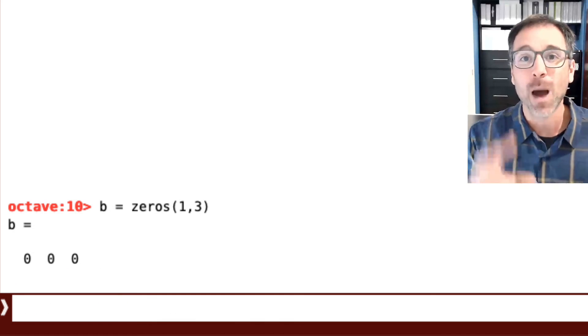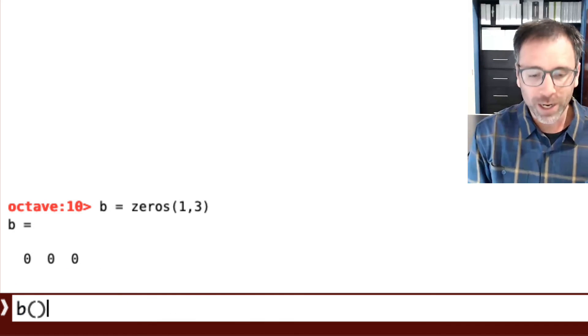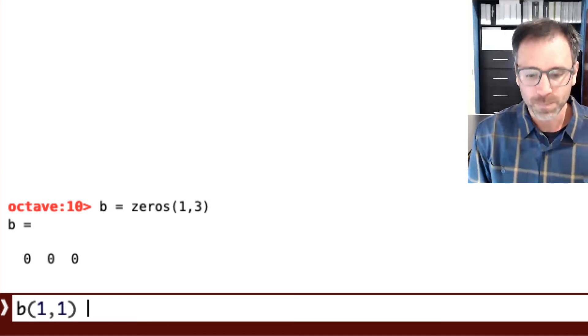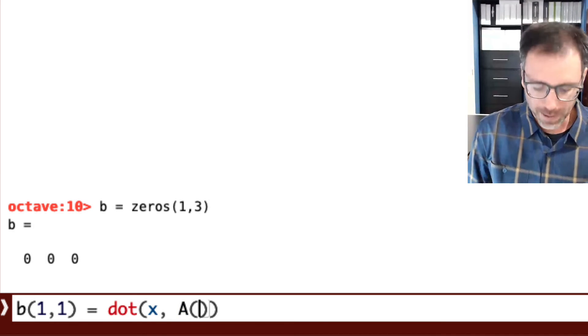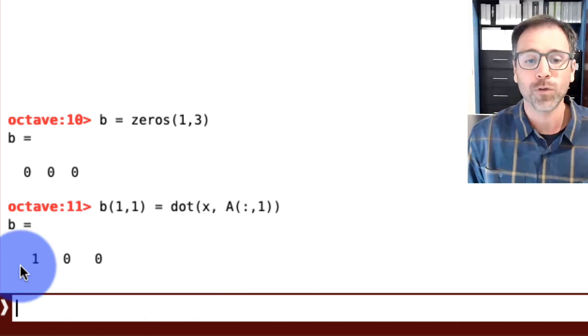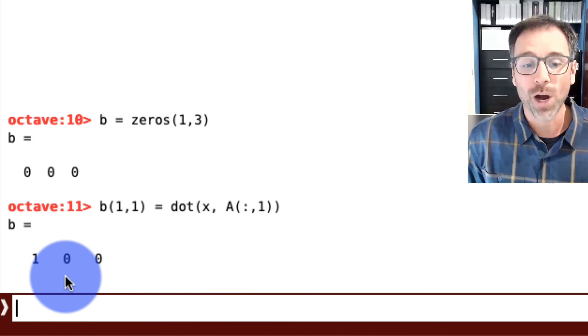We'll look at the first entry of b. It's going to be the dot product between the vector x and the first column of A, which is the actual formula. Notice that I do get 1, just as I expected.